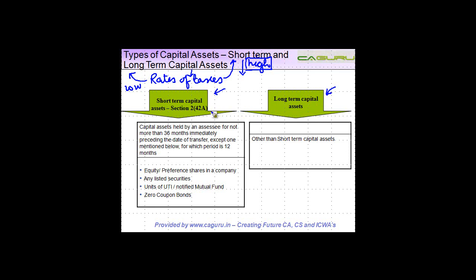So let's first understand what is the meaning of a short-term capital asset. Capital assets held by an assessee for not more than 36 months immediately preceding the date of transfer. So let's say for example I acquire an asset on 1st April 2009. If I continue to own it for more than 36 months, then it is a long-term capital asset. But if I do not own it for more than 36 months, then it is